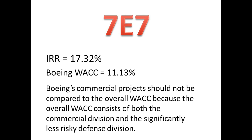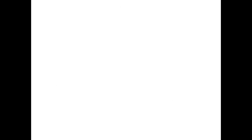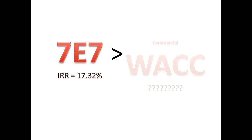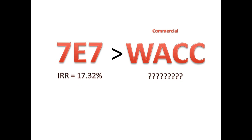The problem here is that Boeing has a defense division that makes the company's weighted average cost of capital much lower. The 7E7 project is a commercial project; therefore, Boeing needs to find out what the commercial division's weighted average cost of capital is. They can then compare the internal rate of return of the 7E7 project with the weighted average cost of capital of the commercial division.